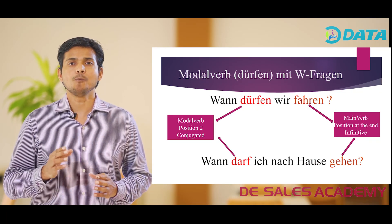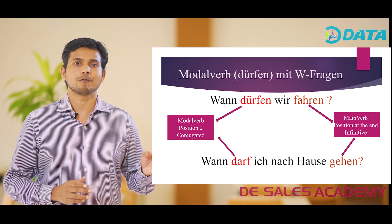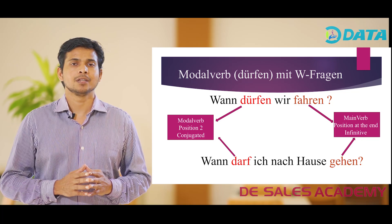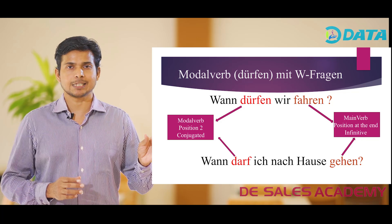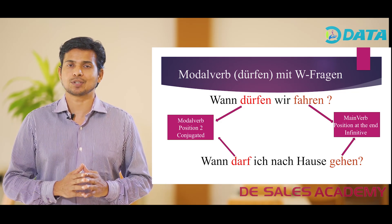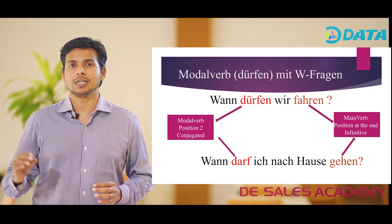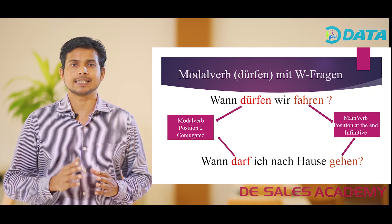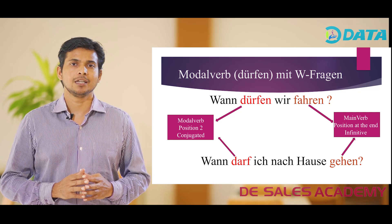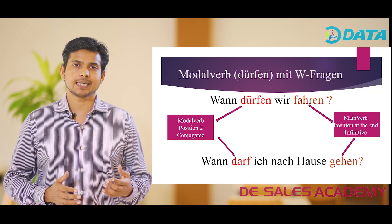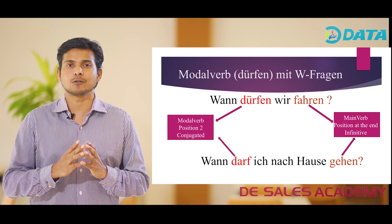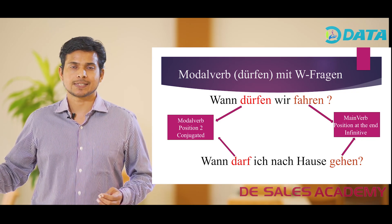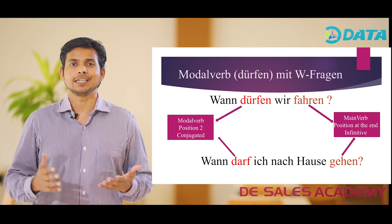Now let us consider how the modal verb Dürfen is used along with W-Fragen, W-questions. When we use the modal verb with W-questions, the W-Frage is placed first, the modal verb is placed in the second position and conjugated, and the main verb is placed at the end of the sentence in its infinitive form. Example: Wann dürfen wir fahren? When are we allowed to travel? Dürfen is conjugated according to the subject wir, and fahren is placed at the end in its infinitive form.